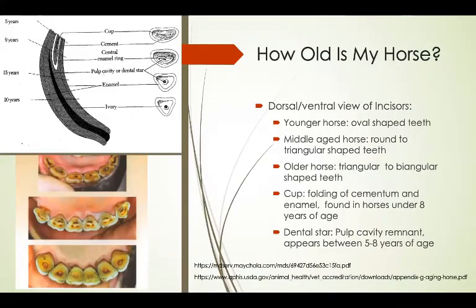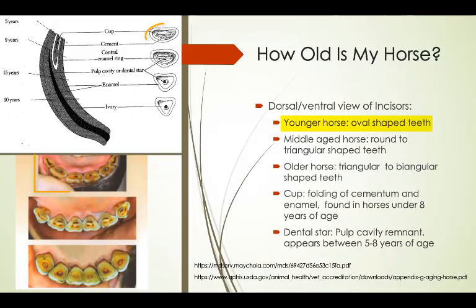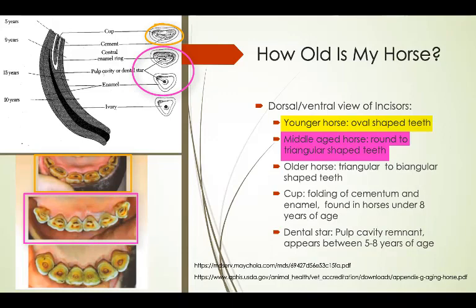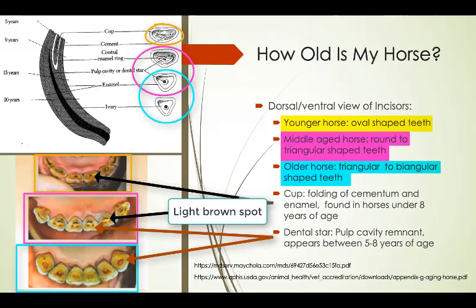You can also look at the incisor teeth from the dorsal or ventral view — that is, looking up or down at the teeth. Younger horses have oval-shaped teeth. Middle-aged horses have round to triangular teeth, and older horses have triangular to biangular teeth. The cup or infundibulum is an infolding of cementum and enamel. It can be found in horses under eight years of age. After eight years of age, the cup is worn off and disappears, and then the pulp cavity or dental star becomes evident. Look at this image and note both the changes in shape and arrangement of the teeth as a horse ages.